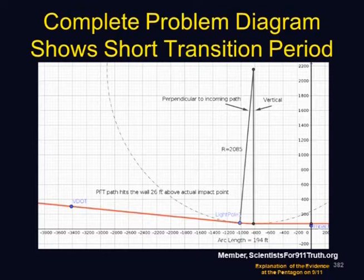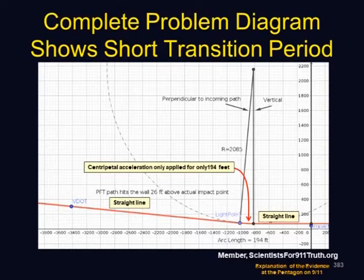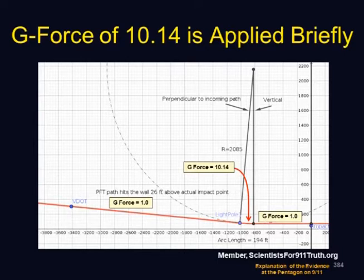Here's our more complete problem diagram drawn to scale. The plane starts from the left at the V-dot tower, comes to the arc where it makes the transition, then goes to the Pentagon wall. It's a straight line from V-dot to the arc, and another straight line toward the Pentagon building. The centripetal acceleration is only applied for 194 feet within the arc. We have 1G to the left, 1G to the right, and 10.14G within the arc — quite a big difference.